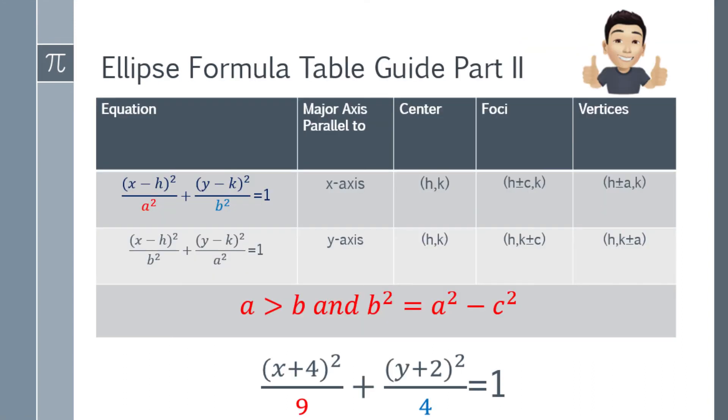So let's check the table again. Notice that 9 is greater than 4, right? And that 9 is with x. So we're going to use the upper part of the table. So that will be the a square with x, and its major axis is parallel to the x-axis. Center is h,k, and the foci will be h plus minus c, k, and the vertices will be h plus minus a, k.